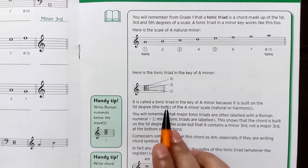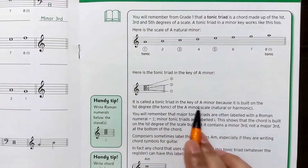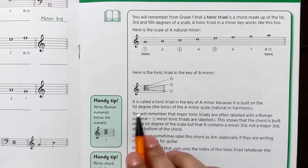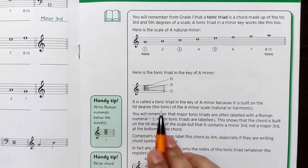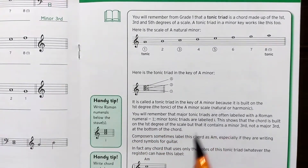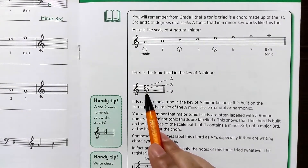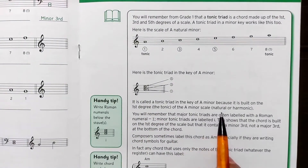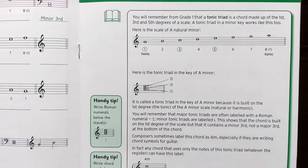It is called a tonic triad in the key of A minor because it is built on the first degree of the A minor scale. This is called A minor because it is built on the first degree, which is the note A — no matter if it's a natural or a harmonic scale.